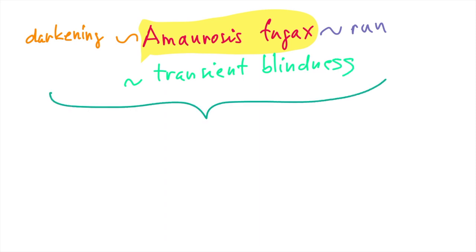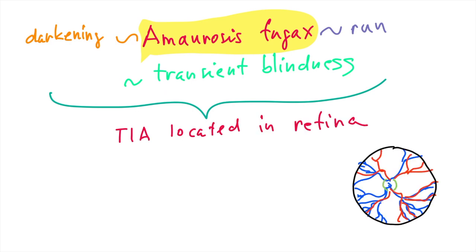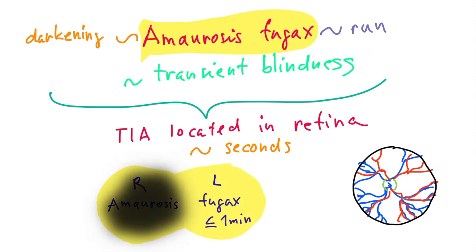And the mechanism of this short-term blindness is transitory ischemic attack located in the retina. In this case the short term means rather seconds and the vision normalizes most commonly within one minute and is typically one-sided.